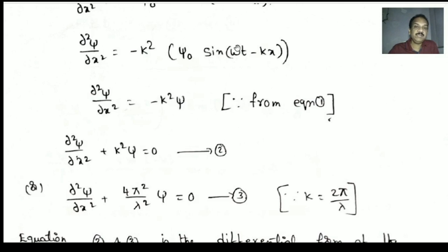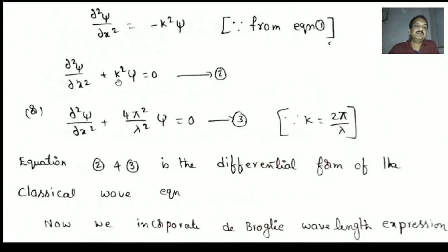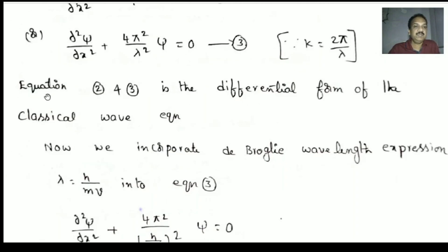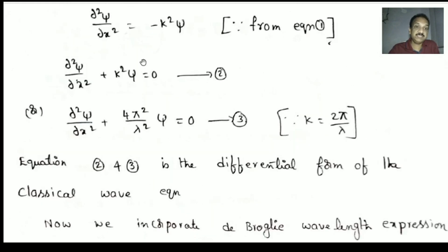Here we eliminated the trigonometric terms from the equation. Now we replace k with its value k = 2π/λ in equation 2. Then ∂²ψ/∂x² + (4π²/λ²)ψ = 0. This is equation 3. Equations 2 and 3 are the differential form of the classical wave equation; these two equations are still in classical form.